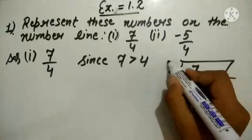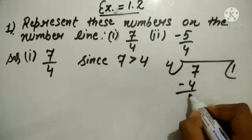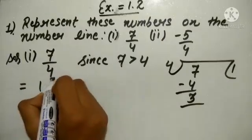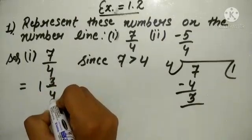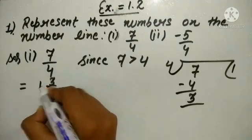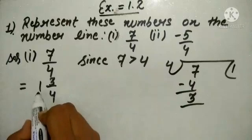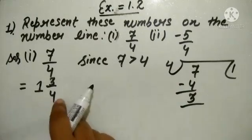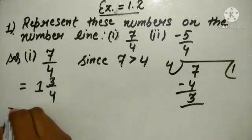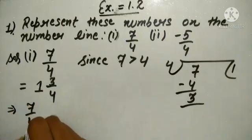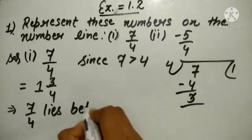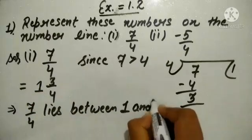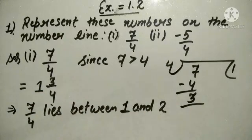Mixed form means: 4 ones are 4, and 7 minus 4 gives remainder 3. So we can write 7 over 4 as 1 and 3 over 4, because 4 ones are 4 plus 3 equals 7 over 4. As the whole number part is 1, this number represents 1 and something — 1 and 3 over 4. So 7 over 4 lies between 1 and 2.